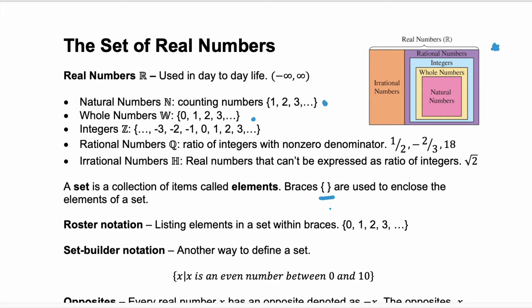There's two different types of notation that we're going to use when we talk about numbers. We have roster notation which is what you see above and that uses the braces to list all of the elements of a set.